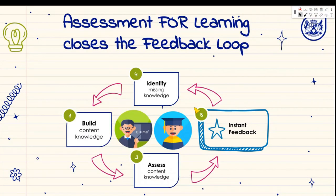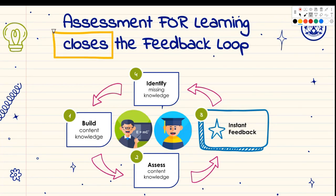Because we haven't identified the missing knowledge, we're building new knowledge on faulty foundations. If we spend more time re-establishing this feedback loop — making the feedback and identifying missing knowledge happen more effectively — then surely we'll have greater success in summative assessment. Assessment for learning tries to close this loop by giving us instant feedback, because we cannot build the feedback loop on summative assessment alone.